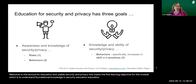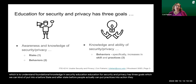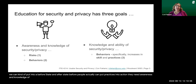Education for security and privacy has three goals, which we can put into a before state and after state. Before people can put practices into action, they need awareness and knowledge of two things: security and privacy risks, and security and privacy behaviors.